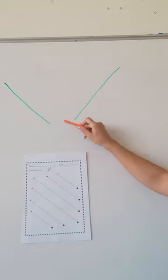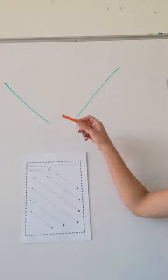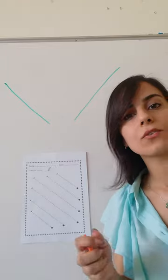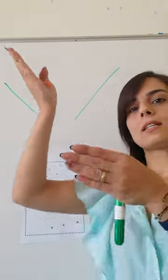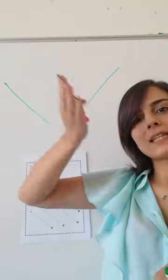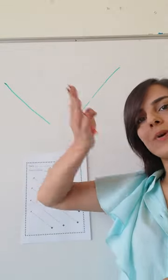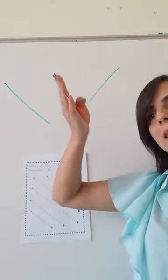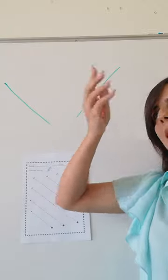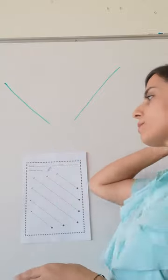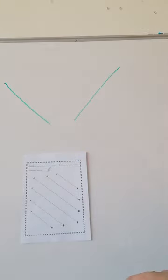Diagonal lines are like the rain that goes like this. This is the way it rains. Rain has the shape of a diagonal line.